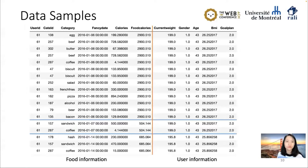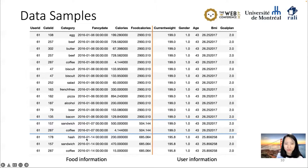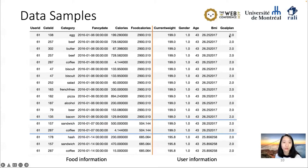We extracted some data samples from our dataset. We not only have food information but also user information. For food information, we have item ID, item name, and the date, which we use to separate each basket. We also have the calorie for each item and the total calories for each basket. For user information, we have current weight, gender, age, BMI, and global goal plan. Most users in our dataset want to lose weight.